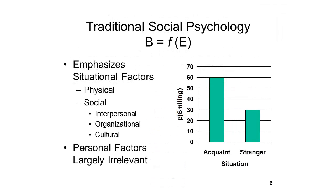By contrast, traditional social psychology emphasizes the other side of Lewin's grand truism. It assumes that behavior is primarily determined by features of the environment, and especially features of the sociocultural environment, such as interpersonal, organizational, and cultural factors. It also assumes that individual differences in personality — people's standings on trait dimensions — are largely irrelevant. Behavior is a function of the environment. For example, to return to smiling behavior, we might arrange an encounter between a subject and either an acquaintance or a stranger, and see if smiling occurs more often in one situation than the other. It might turn out that the average person is more likely to smile in the presence of an acquaintance.